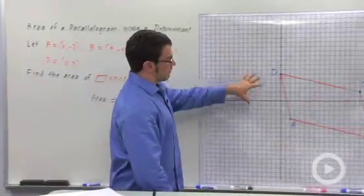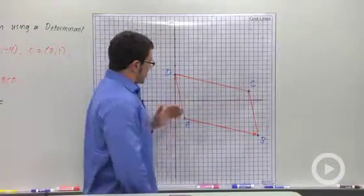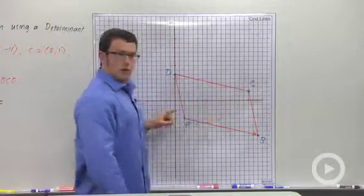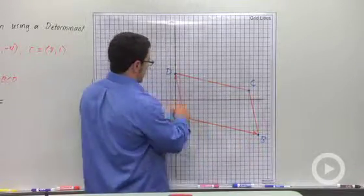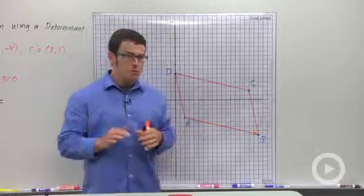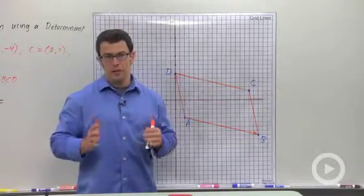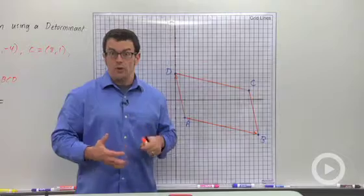I've got the parallelogram graphed here, and it turns out that if you pick any vertex of the parallelogram, I'm going to pick A, and look at the vectors AB and AD, you can use those vectors to form a determinant whose value is going to be the area.